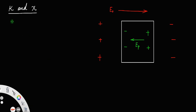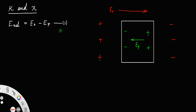So the net electric field E_net will be the external field E₀ minus E_p. We can call E_p the polarizing field. Let us call this equation number 1.